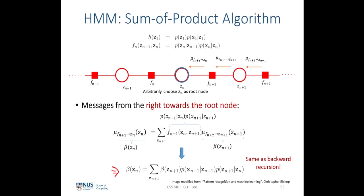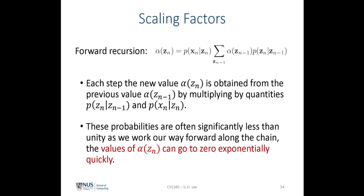One important thing to note about the forward and backward recursion algorithm is that we must introduce a scaling factor, because otherwise the probability will go exponentially quickly to zero. The alpha and beta recursions involve products of several probability distributions, all between zero and one, and the product of numbers between zero and one goes to zero very quickly. The alpha probability here consists of multiple terms that will approach zero fairly quickly.